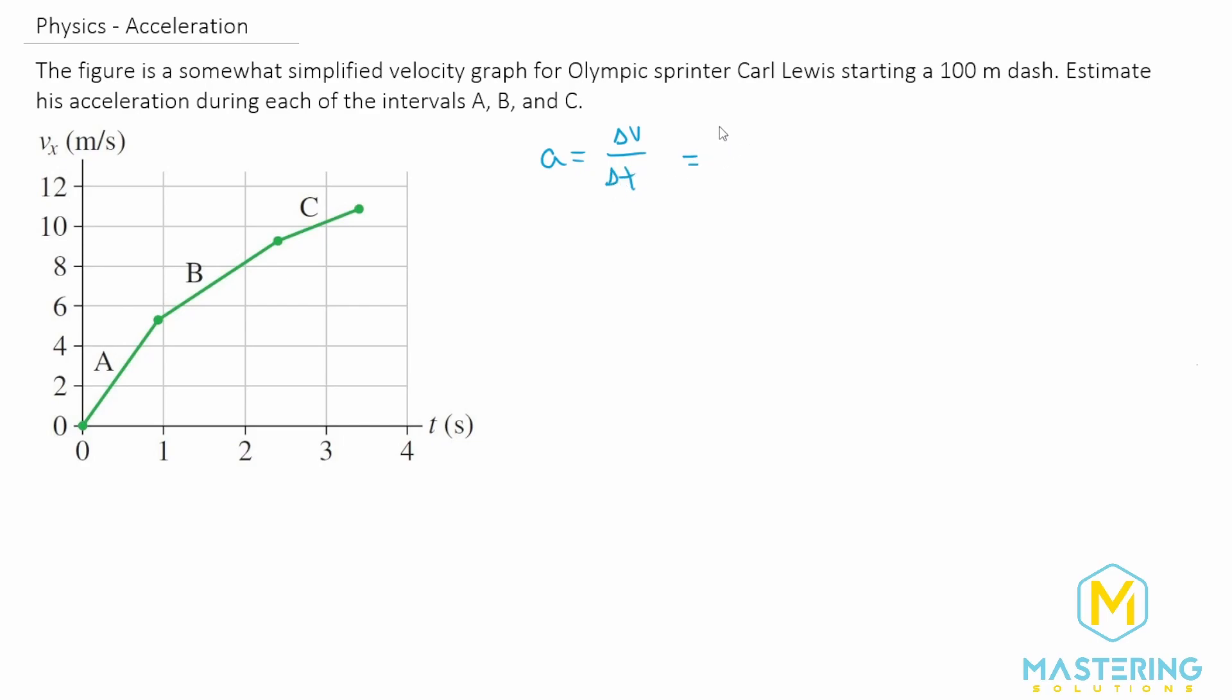Delta anything always means V final minus initial. So V final minus V initial over T final minus T initial.